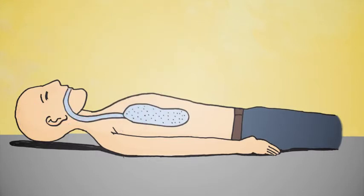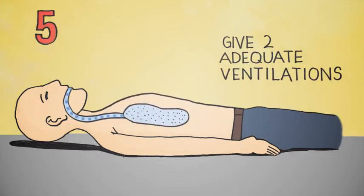Give 30 compressions and then 2 breaths. Avoid excessive ventilations. Each breath should last only until the chest rises. Breaths should be given gently, 6 to 8 breaths per minute.